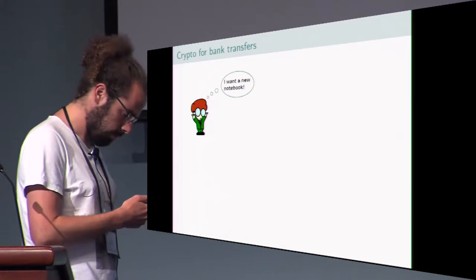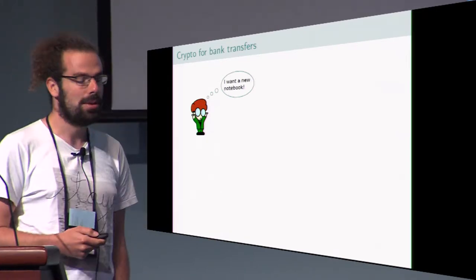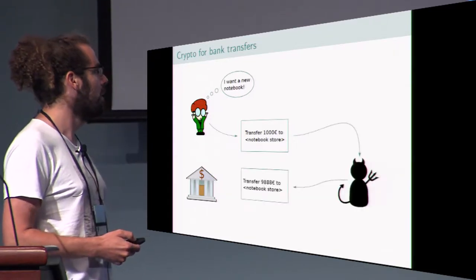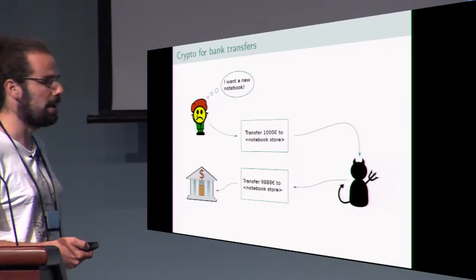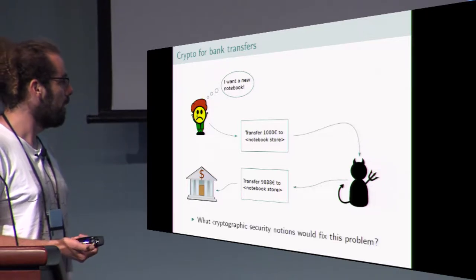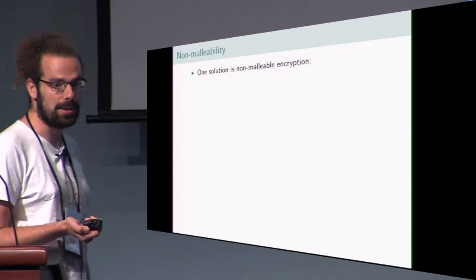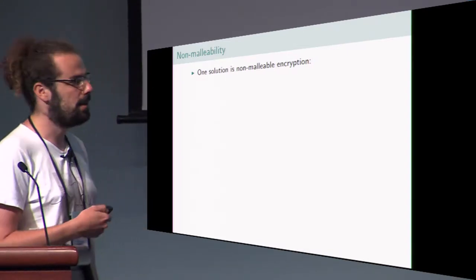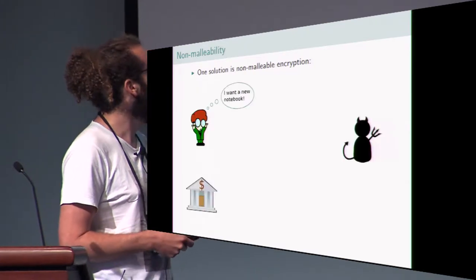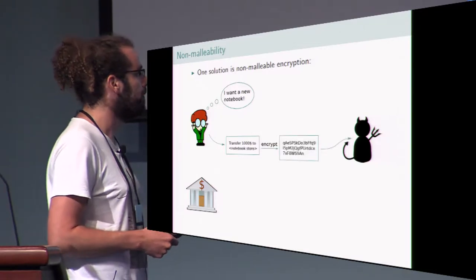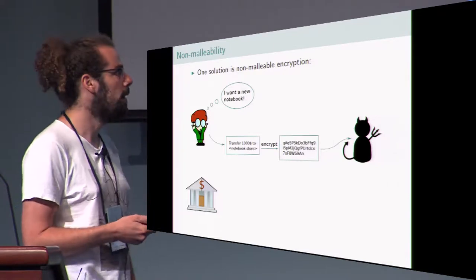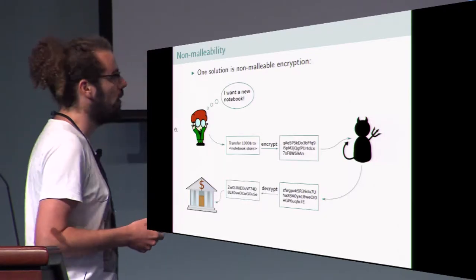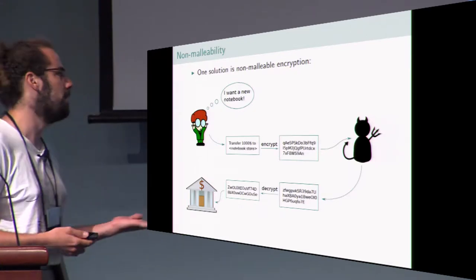We have this guy who wants to buy a new notebook, so he sends a message to his bank to transfer some money to the notebook store. But if this message is intercepted and a malicious adversary changes the contents of the message, then he will be very unhappy because he loses all his money. Non-malleable encryption could prevent this. If he encrypts the message, non-malleability ensures that any change by the adversary will result at best in a random change of the message, so the bank will be confused and not transfer anything.